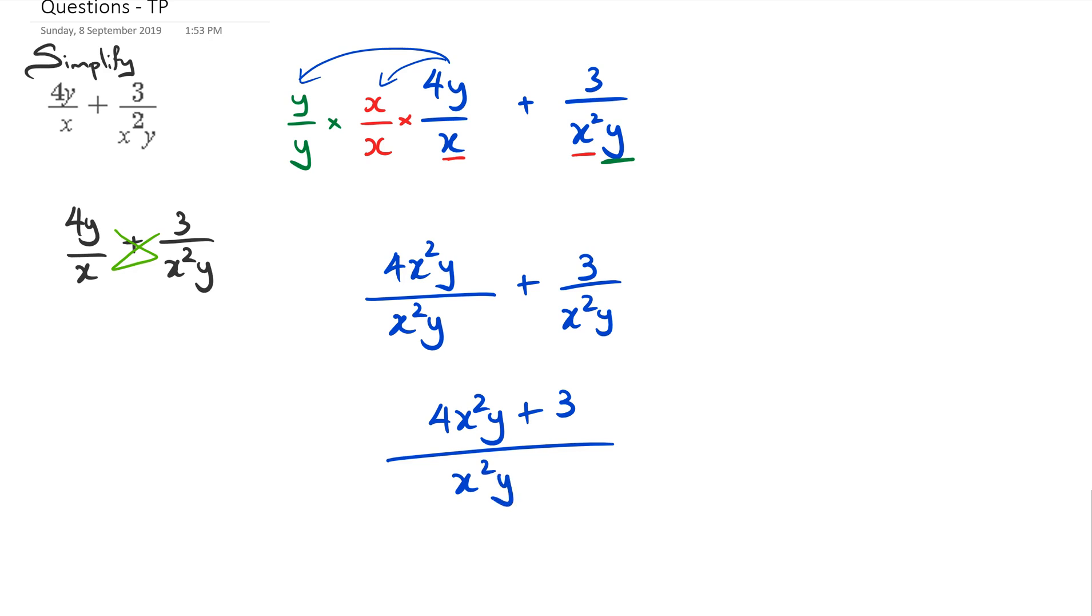Now I'm going to show you another question. Say for example you're thinking now, this is too complicated, I'm going to go with the upside down method. If you do the upside down method, what happens is you get 4y times x squared y plus 3 times x, and that's divided by x multiplied by x squared y. So what you end up getting is 4x squared y squared plus 3x over x cubed y.